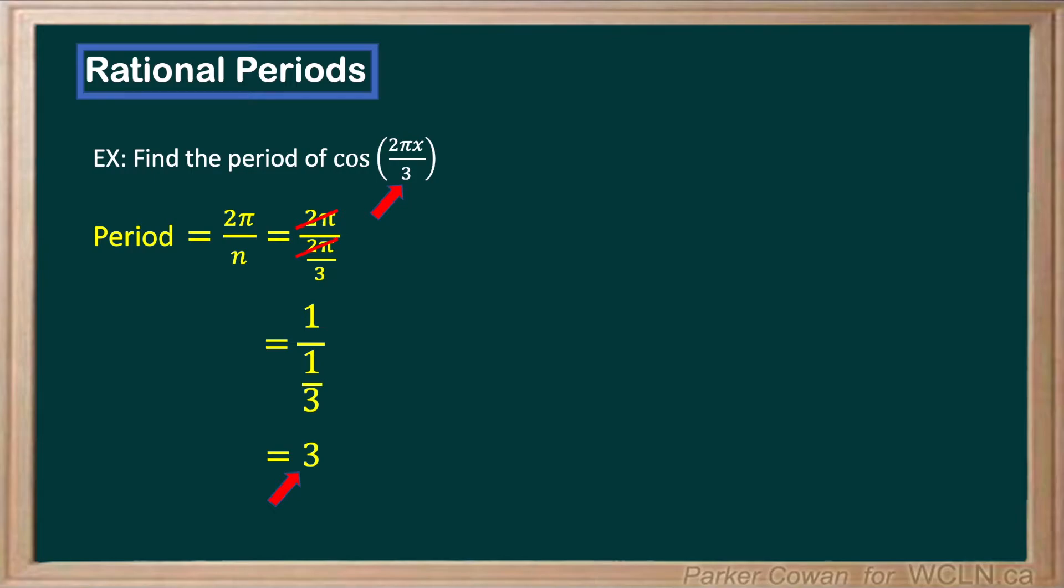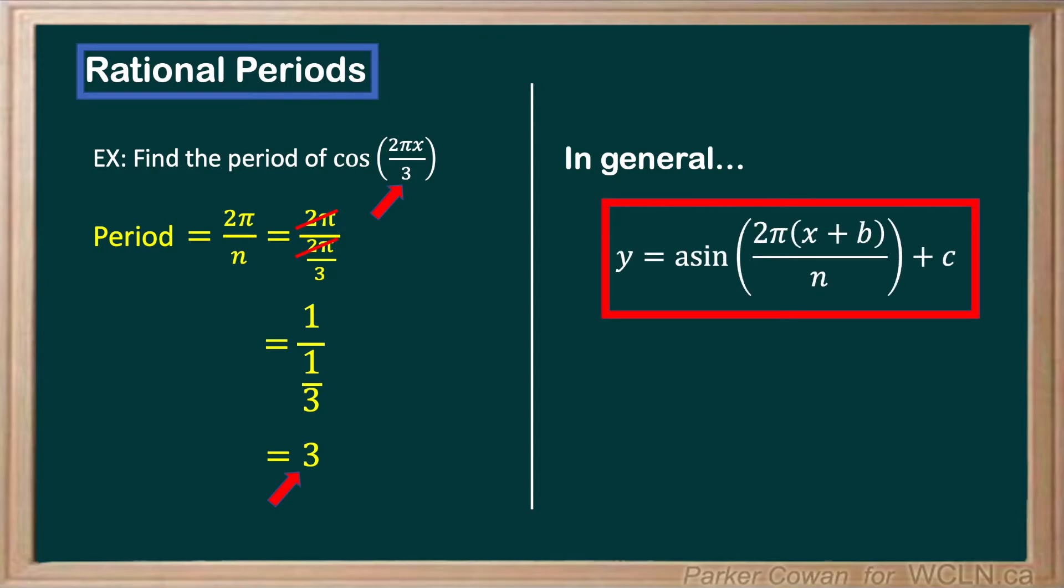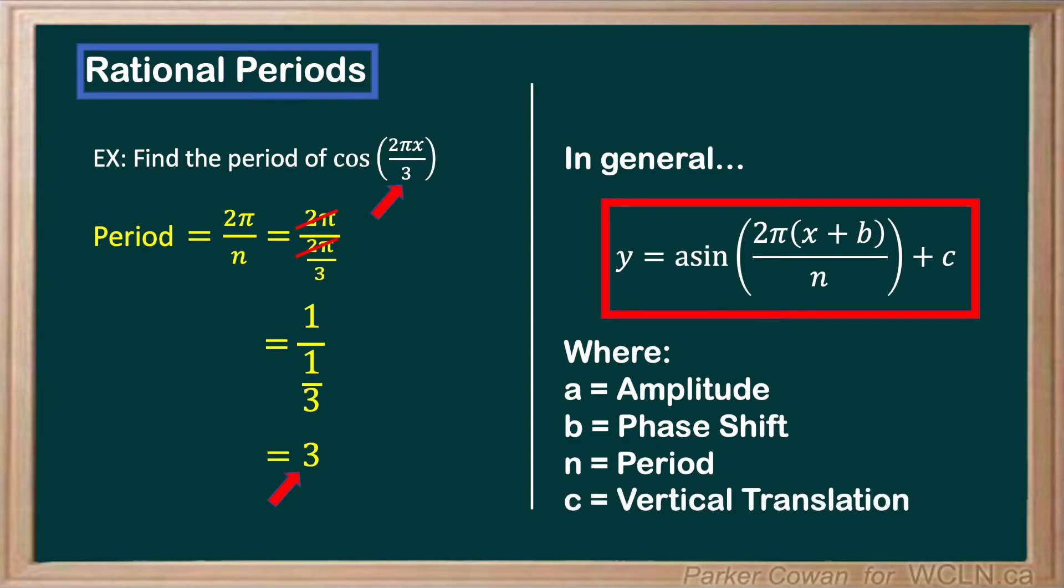Furthermore, we can create a general template for these sinusoidal functions. If we can manipulate our function to fit this form, we can identify each piece of the sinusoid, where a equals amplitude, b equals phase shift, n equals period, and c equals vertical translation.